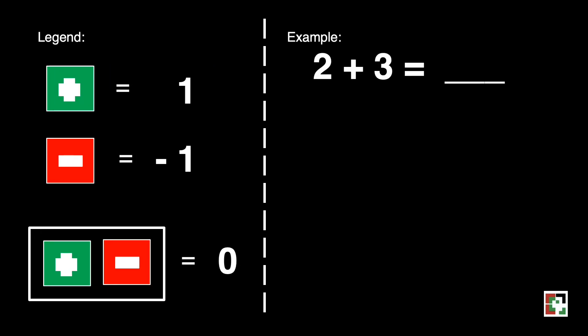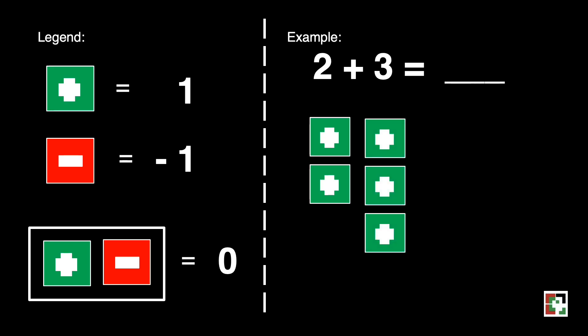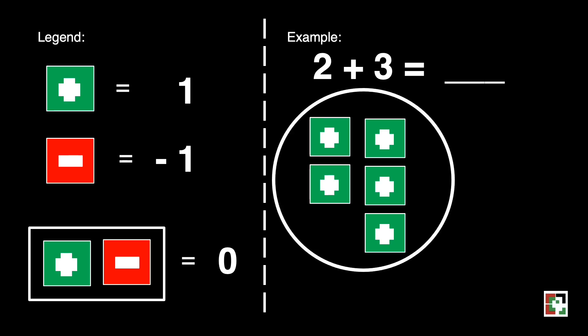Example: we have positive 2 plus positive 3, or just 2 plus 3. That is represented by 2 green squares plus 3 green squares. If you're going to count that, that would be 5 green squares. So our answer is 5.